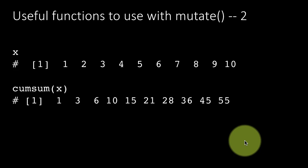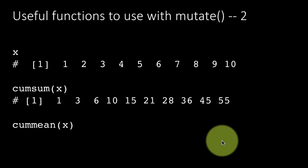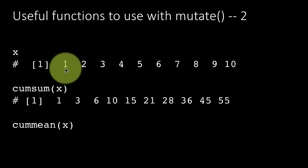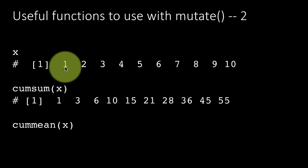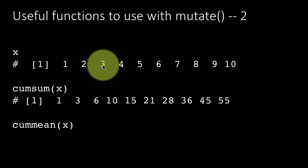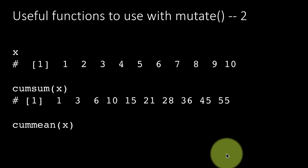Dplyr also has a function called cummean, which is a cumulative mean. So the mean of the first value, of course, is 1. The cummean at the second position is the cumulative sum, 3, divided by the number of elements, 2, which is 1.5. And the sum of the first three elements is 6. Therefore, the cumulative mean of the first three elements is 2 and so on.